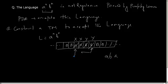So every time I take the leftmost A, mark it as X, take the rightmost B, mark it as Y, then again take the leftmost A, mark it as X. This procedure continues till I do not have a single A or B. If I have a single A or B remaining, then I should reject the string. If I do not have any A or B, I should accept the string.